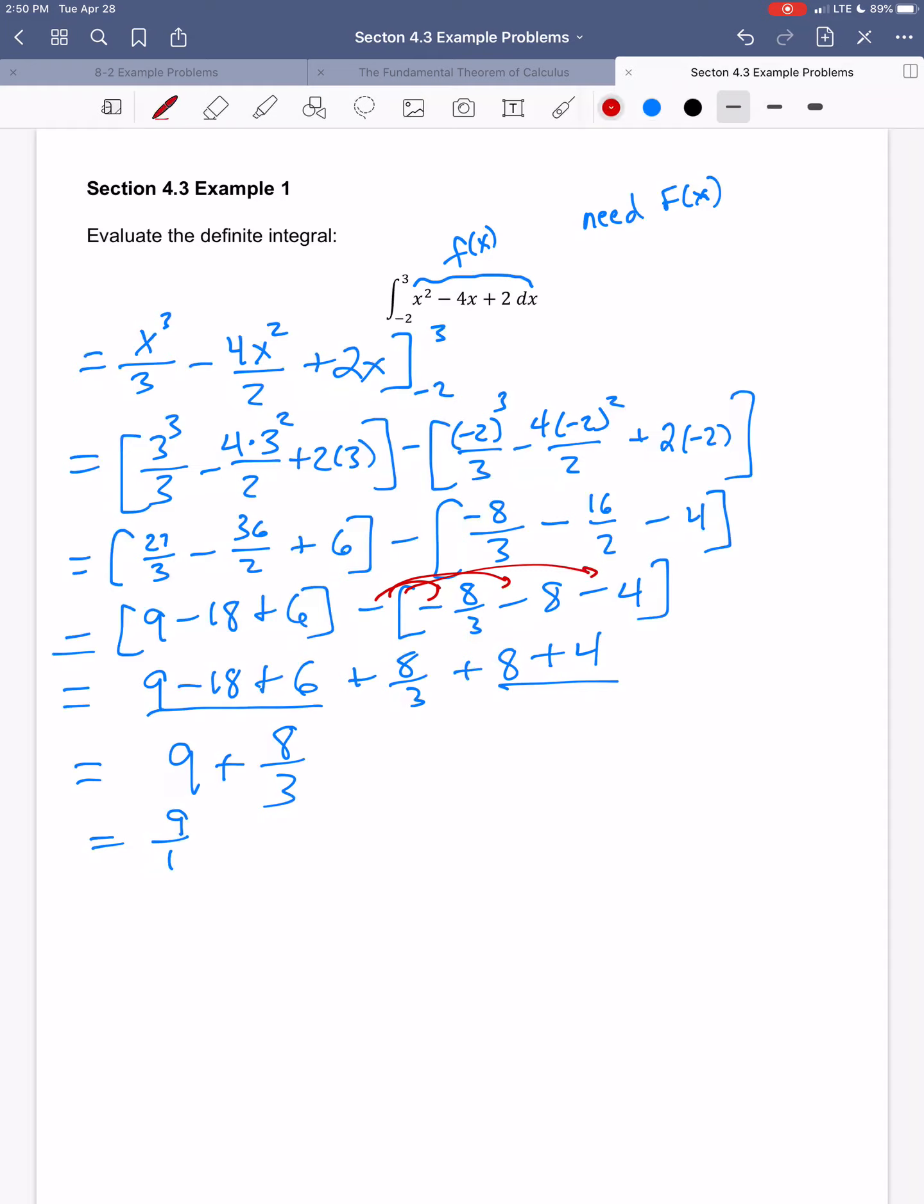So I want to get a common denominator, so 9 times 3 is 27, so I get 27 thirds plus 8 thirds, so my answer would be 35 thirds.